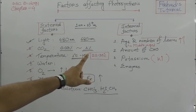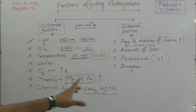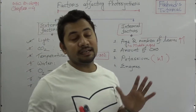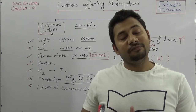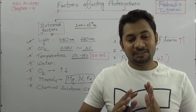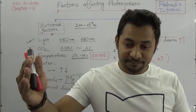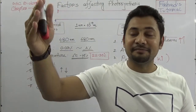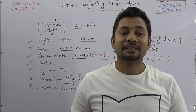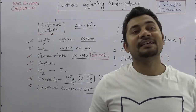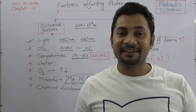So these are the external and internal factors affecting photosynthesis. The internal factors are: age and number of leaves, amount of carbohydrates, potassium, and enzymes. Please remember not to leave any lines of your textbook, especially in physics, chemistry, and biology, because each and every piece of information is important for your higher education. I hope you understand and enjoy your study. Please share your feedback and recommendations. Take care, stay well, bye.